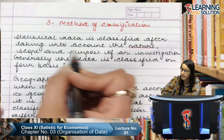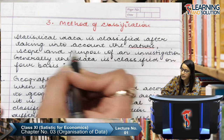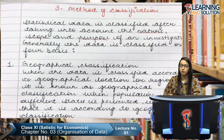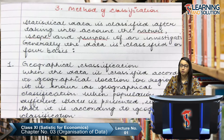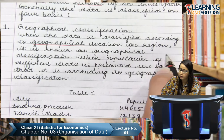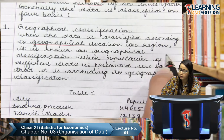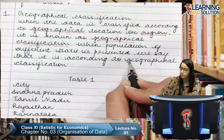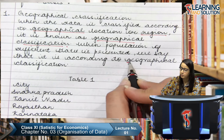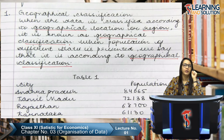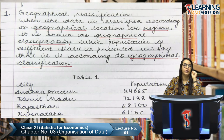Statistical data is classified after taking into account the nature, scope, and purpose of an investigation. Generally, data is classified on four bases. The first is geographical classification — when data is classified according to geographical location or region, it is known as geographical classification. For example, when the population of different states is presented state-wise, that is geographical classification. The data is bifurcated region-wise.